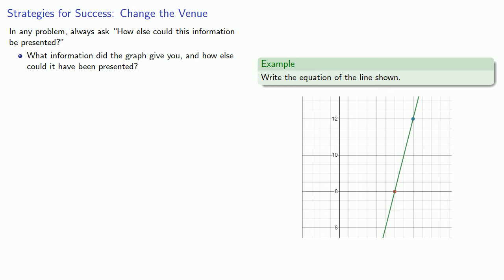And finally, change the venue. In any problem, always ask, how else could this information be presented? What information did the graph give you, and how else could it have been presented? Or what information did you get from the equation, and how else might it have been given to you?